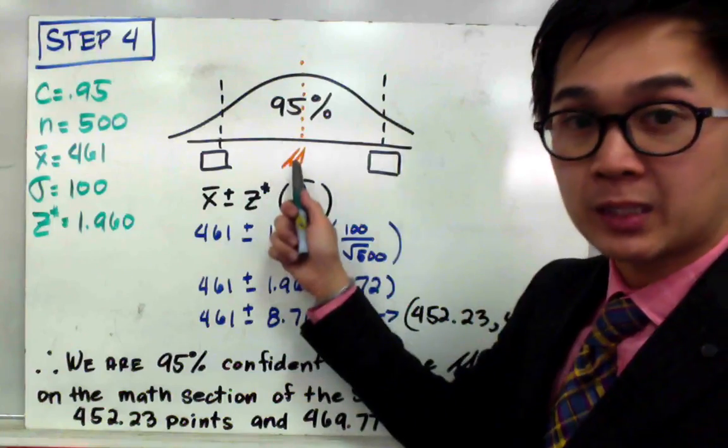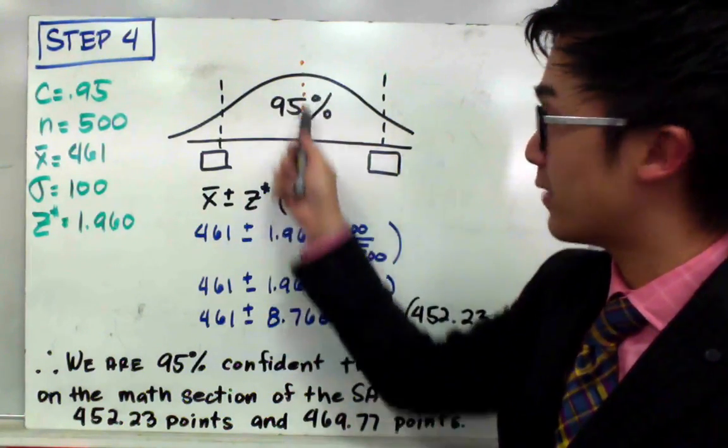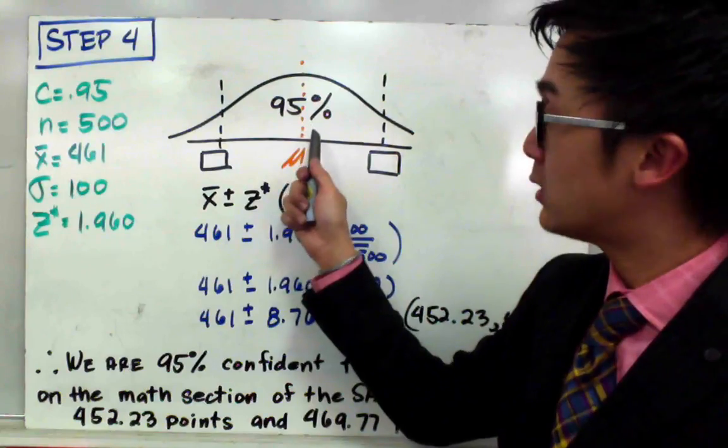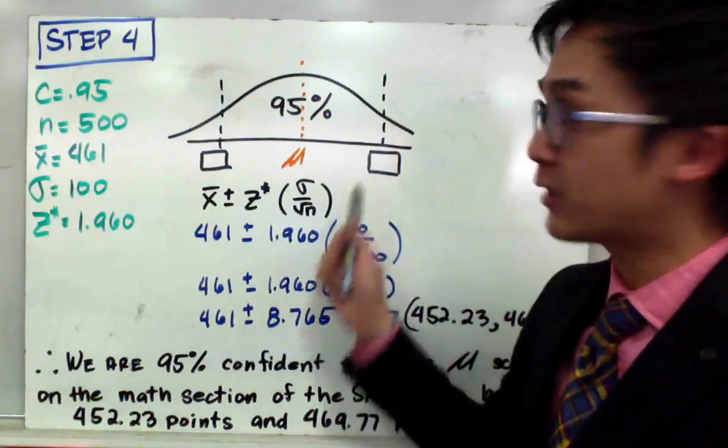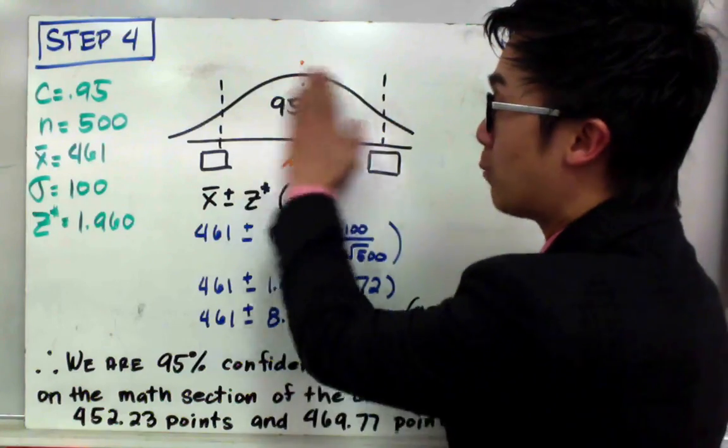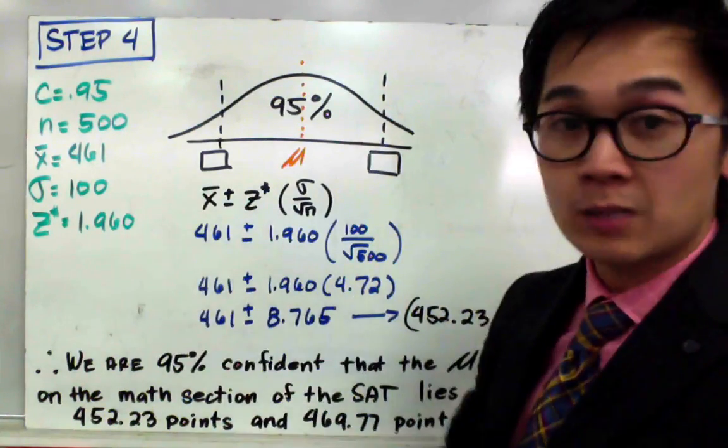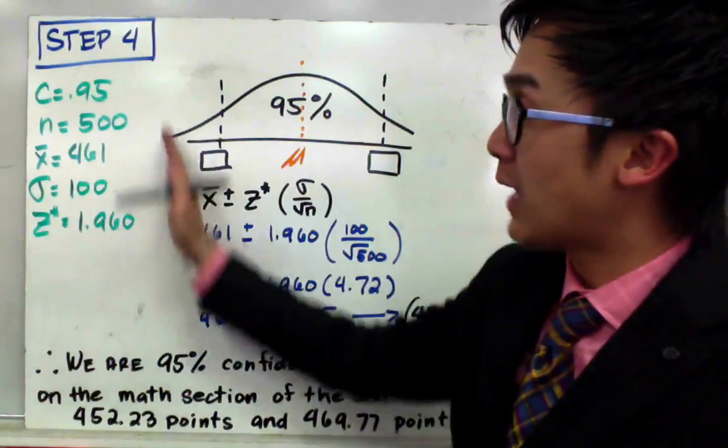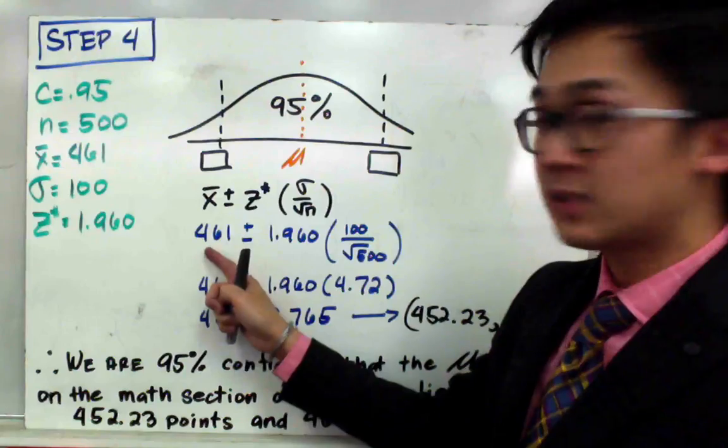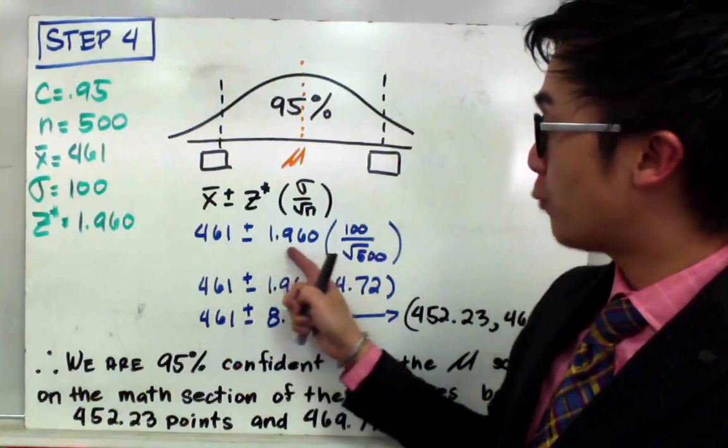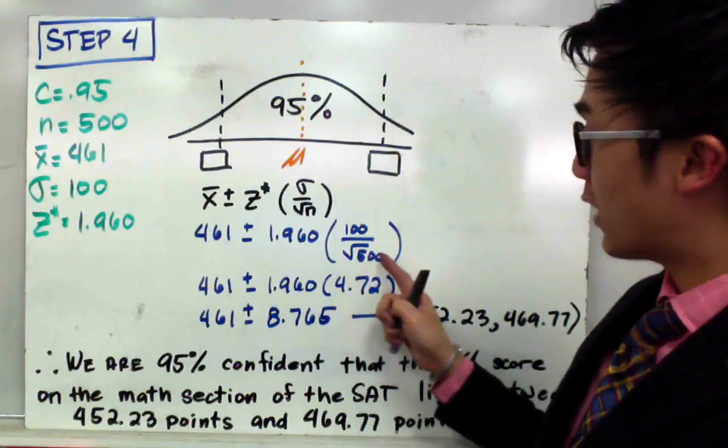We understand that the population mean is unknowable, so we're not going to be able to compute for the exact value of this center. But what we can do is find the two values which will give us the range of values that will estimate our population parameter. And that's what we're going to do by direct substitution and plugging in all the values that we have here from the word problems in our formula. So we'll have 461 plus or minus 1.960 times 100 all over the square root of 500.